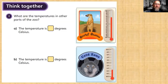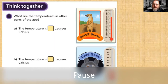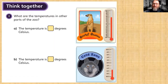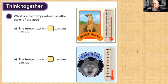Let's have a look at the think-together question: what are the temperatures in other parts of the zoo? Have a look at the Meerkat Mansion and the Cold Zone. In the Meerkat Mansion — remember, the most important thing when looking at negative numbers is to find the zero point. There is zero on the thermometer; we don't start from the bottom.